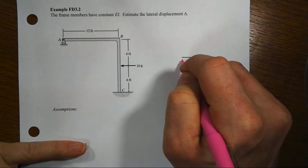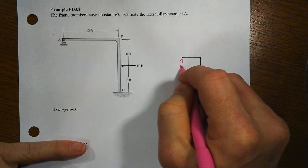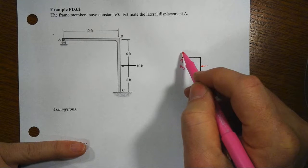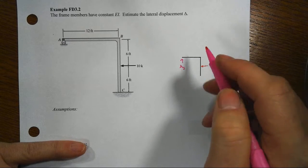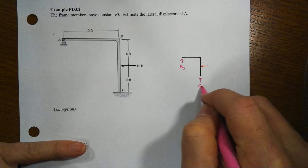We already commented that we have a roller out here at A and so we're going to have to have some sort of vertical reaction so that there's zero displacement in the vertical direction at A.